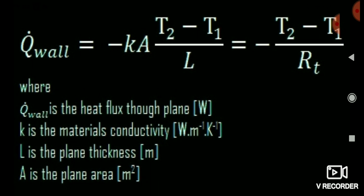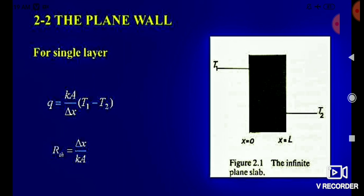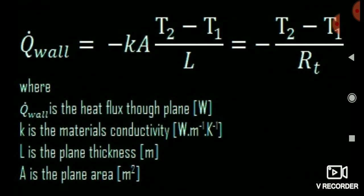The formula for conduction is: Q_wall = -kA(T2 - T1) / L = -(T2 - T1) / R_t. Here, a wall has temperature T1 at the left surface and T2 at the right surface, with total length L and area A. The material conductivity is represented as k. Note that a minus sign is applied before the formula.